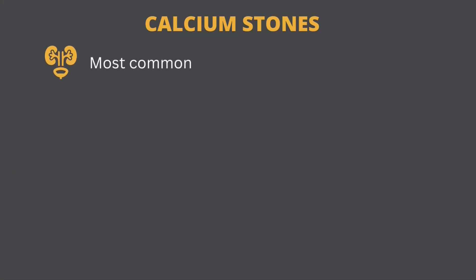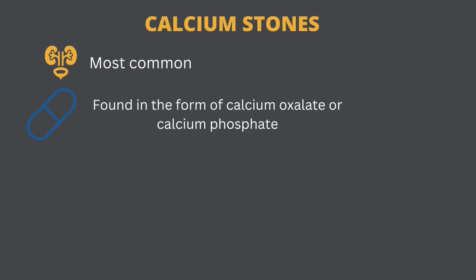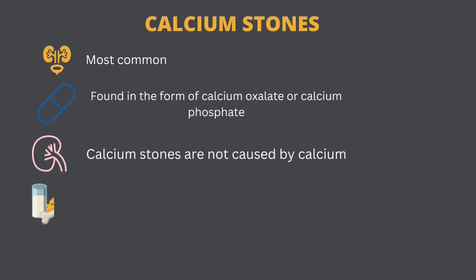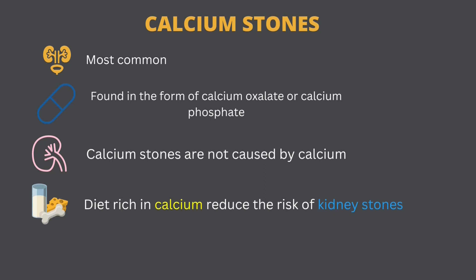Calcium stones are the most common type of kidney stones. These stones are usually found in the form of calcium oxalate, and sometimes as calcium phosphate. There is a popular myth that calcium stones are caused by calcium, but remember: calcium is not the enemy here, it is the solution.